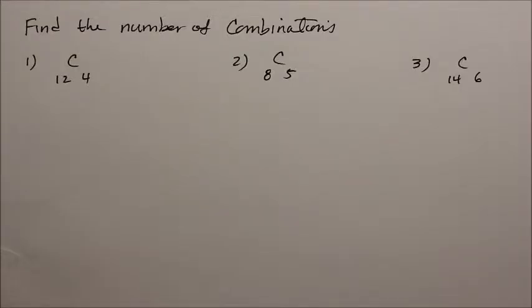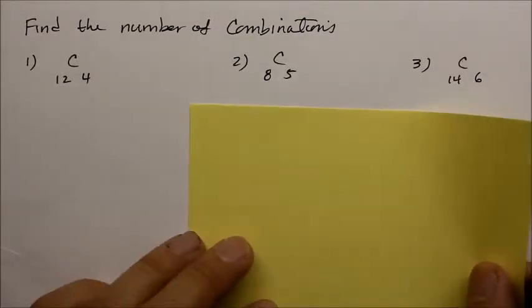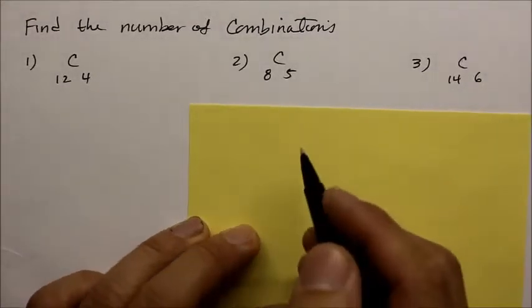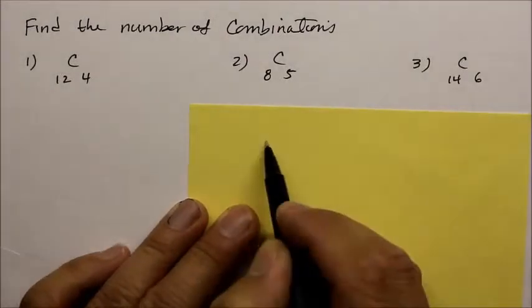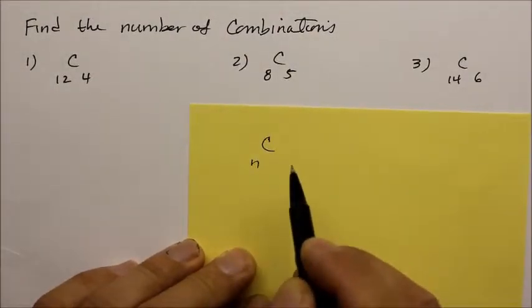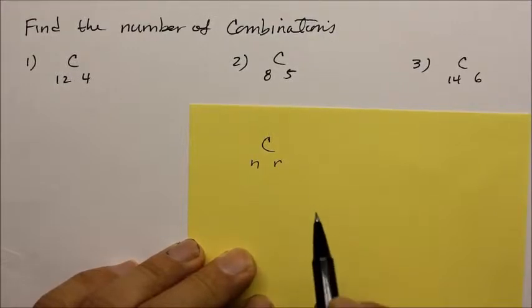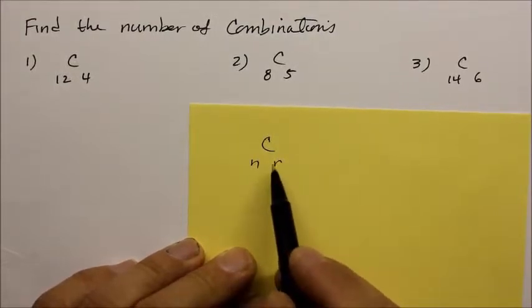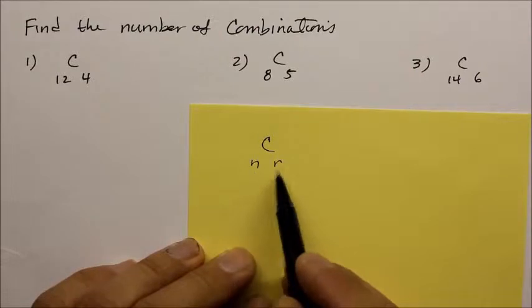Hi. This instructional video is about combinations. Let's talk about the general rule of the combinations. Unlike the permutations, we're going to say the combination of n objects taken r at a time.